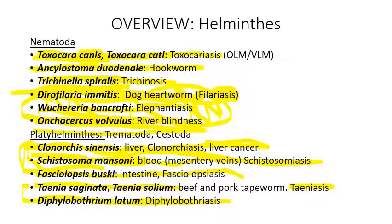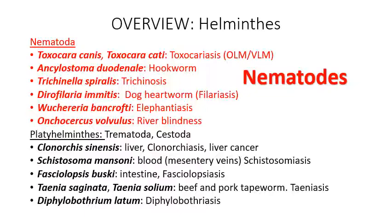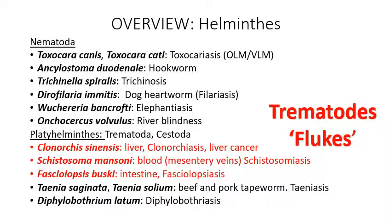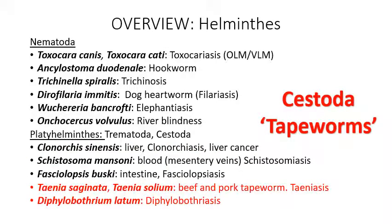Finally, Diphyllobothrium latum is the largest tapeworm, growing up to 10 meters in length. You can get it from undercooked fish — which is unfortunate because many people love sushi. Sushi restaurants should be flash-freezing their fish to kill any Diphyllobothrium latum eggs or cysts. These are all nematodes, trematodes (flukes), and cestodes (tapeworms) respectively.